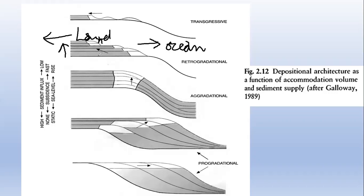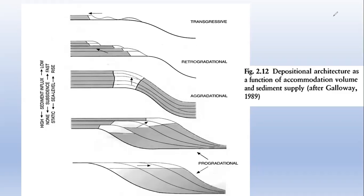So this building of depositional units, or shifting of depositional units landward, is termed as retrogradation, and retrogradation is associated with transgression — it occurs due to sea level rise.